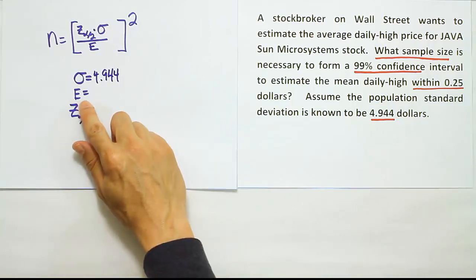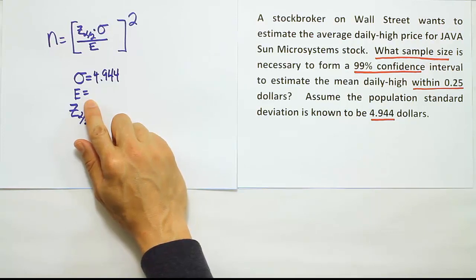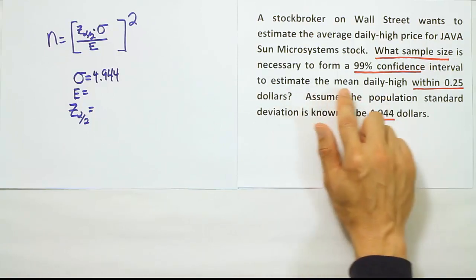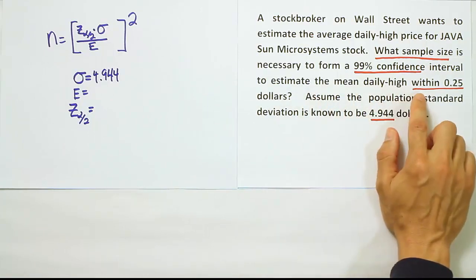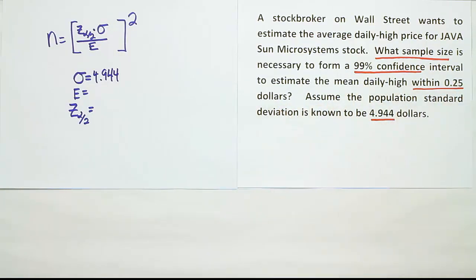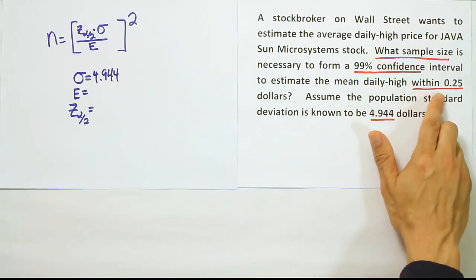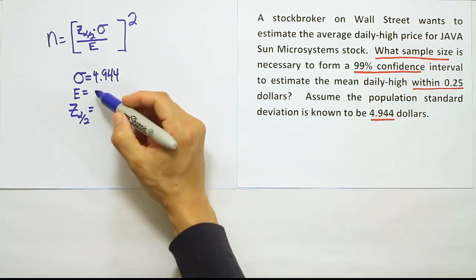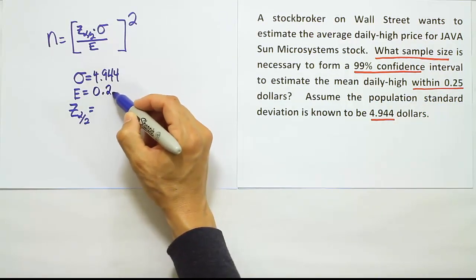After that, we have the error. Now the error, a lot of times it'll use the phrase margin of error in the problem. This problem doesn't have that phrase, but it does say we want to estimate the mean daily high within .25 dollars. So that phrase 'within' is a key phrase indicating the margin of error that's being given. So in this case, we're going to assume the error is 0.25.